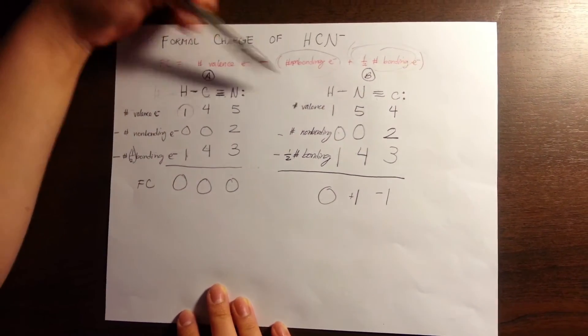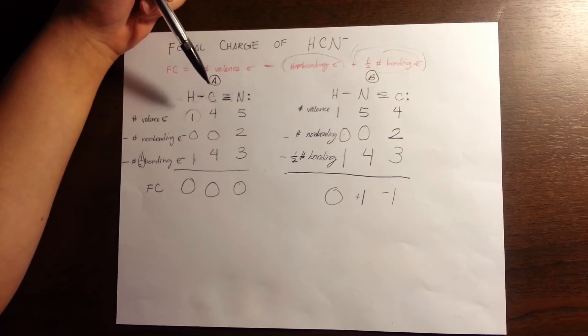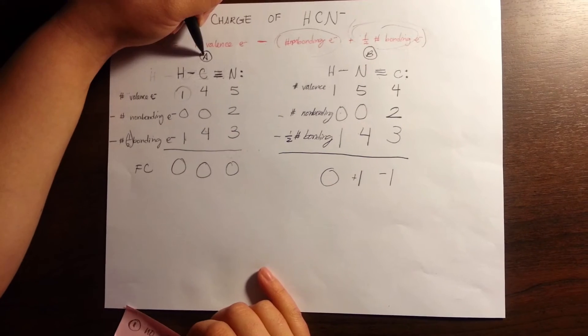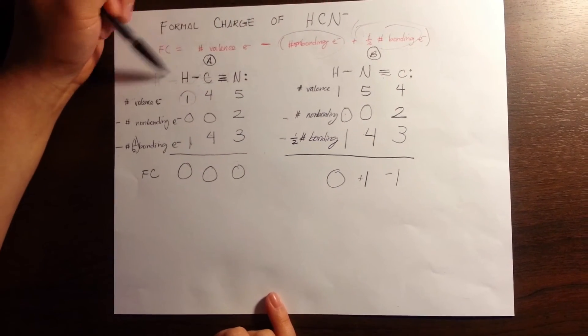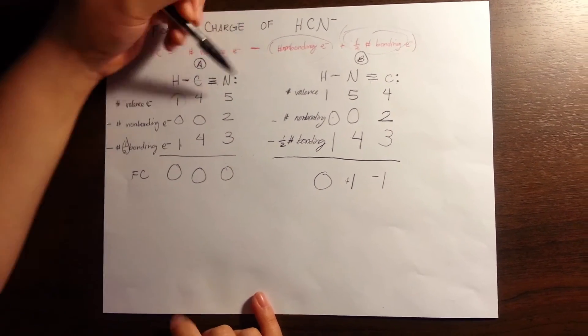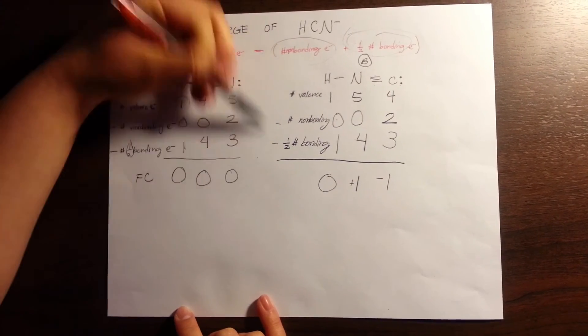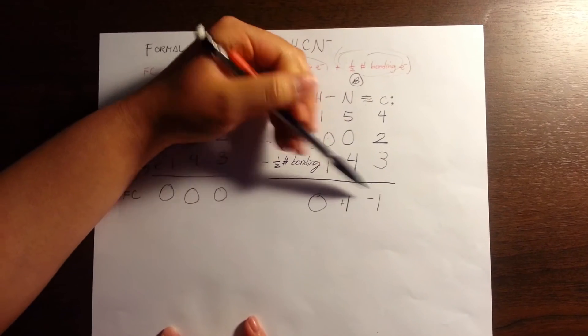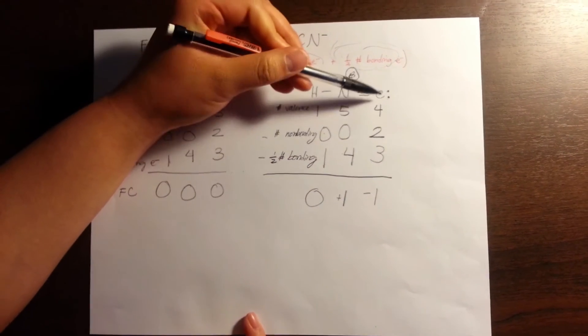If we look at these two, we can see that there's no formal charge on structure A, which would mean that if this were a resonance hybrid, this would be the better structure than structure B, because structure B does have formal charges on the nitrogen and the carbon.